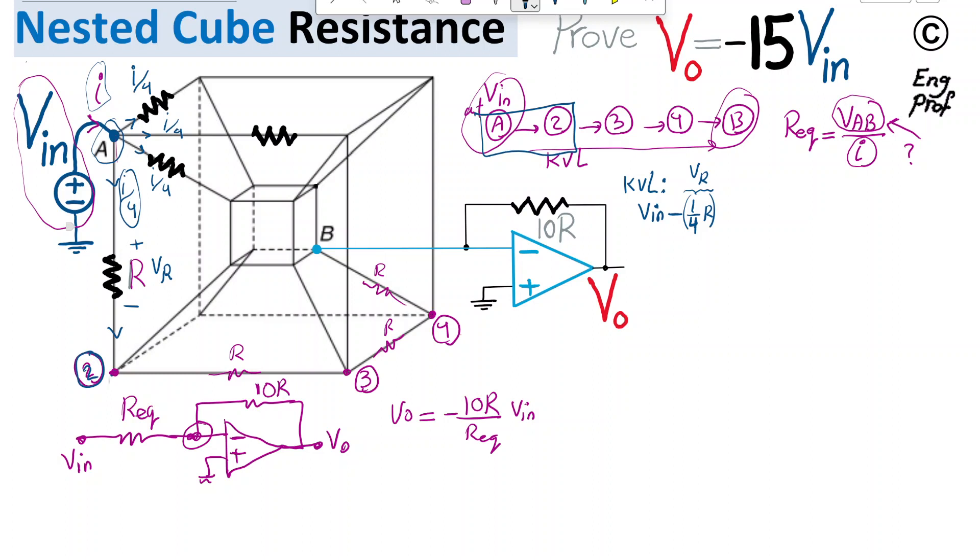The current I over four coming to node 2 notices that there is no difference between the three possible routes it can go through. There is resistor R on all of these edges, so these three currents going out should be exactly equal. So I over four is divided by three, and therefore I divide by 12 is now going through this resistor R, resulting in a voltage drop of I divide by 12 times R. Now we get to node 3.